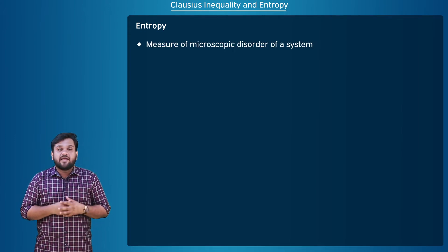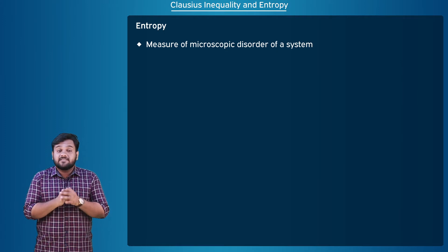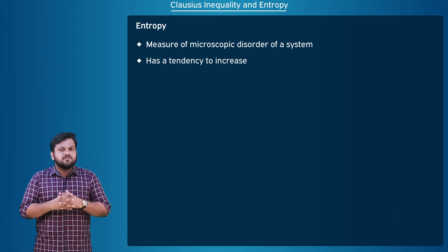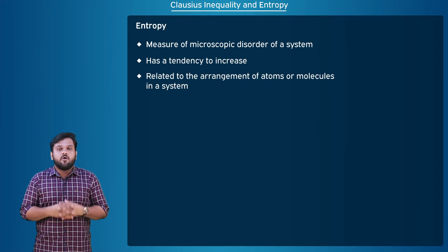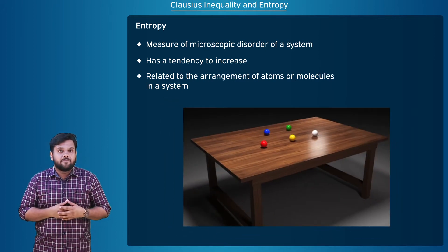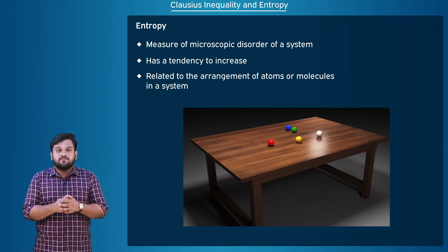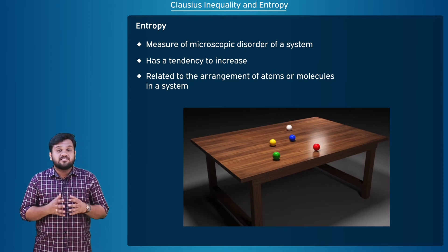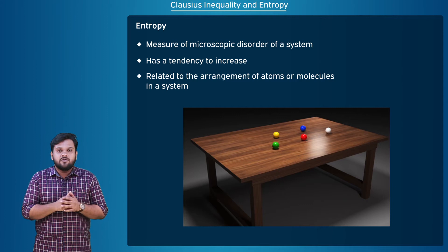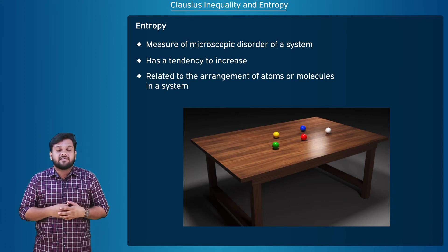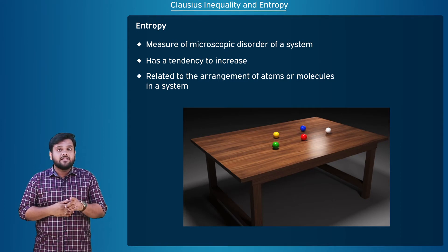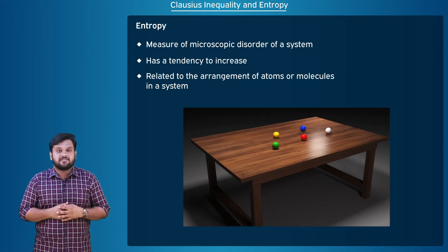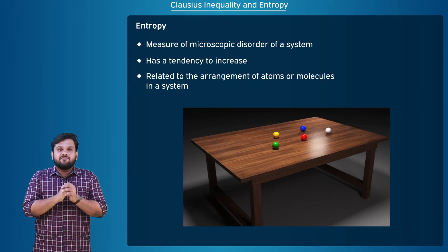Qualitatively, entropy is a measure of microscopic disorder of a system and it has a tendency to increase. It is also related to the arrangement of atoms or molecules in a system. Consider a table surface with 5 balls in hand — there are many ways to arrange these balls on the table. Entropy simply means the number of ways we can arrange these balls. Higher the number of arrangements, higher is the randomness, and the entropy is more if the randomness is more.